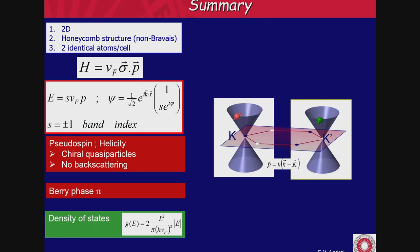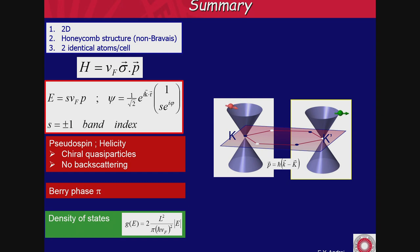The density of states is linear in energy and vanishes at the Dirac point. We are going to use that tomorrow when I talk about scanning tunneling spectroscopy.